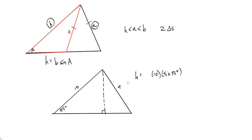Ten times the sine of 55 degrees gives a height of approximately 8.2. So my side A, which is 9, is bigger than my height of 8.2, but smaller than the side b that I'm given — that's bigger than H but smaller than B. That tells us there are two triangles. Now we're going to ignore this height and go ahead and solve it as we would any other law of sines problem.